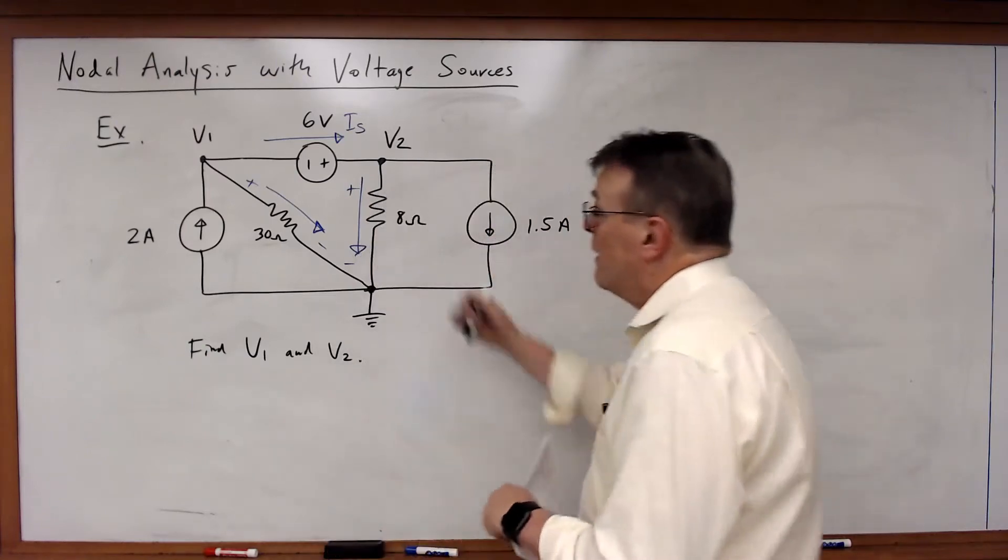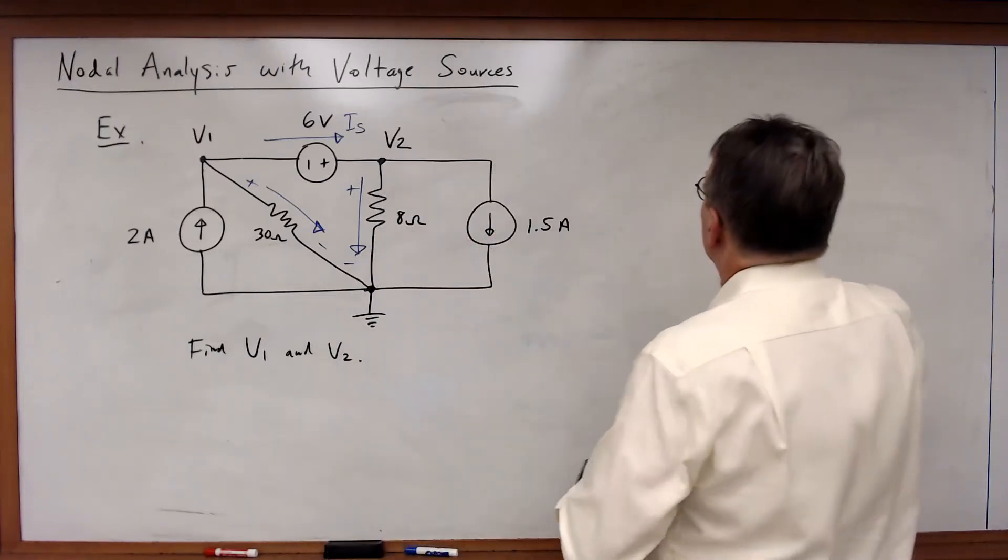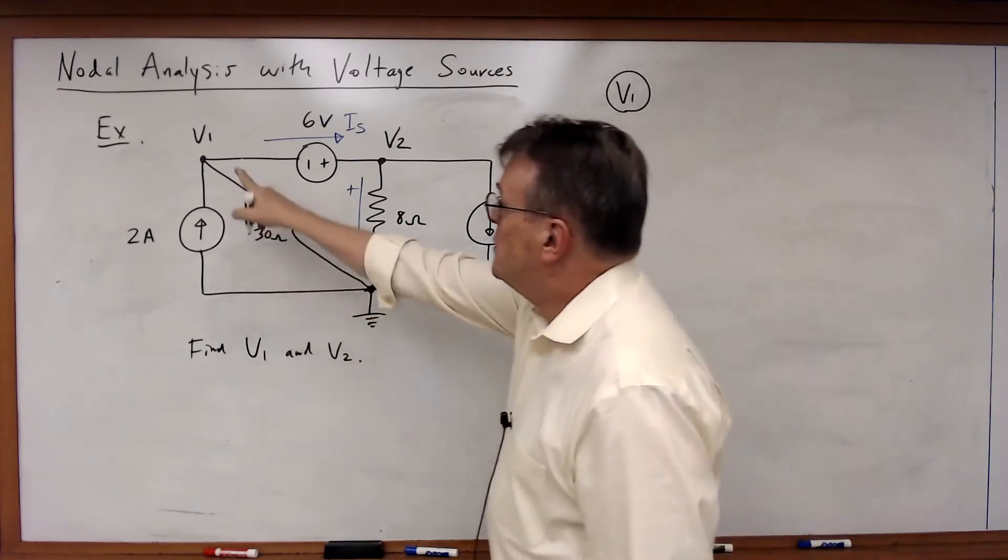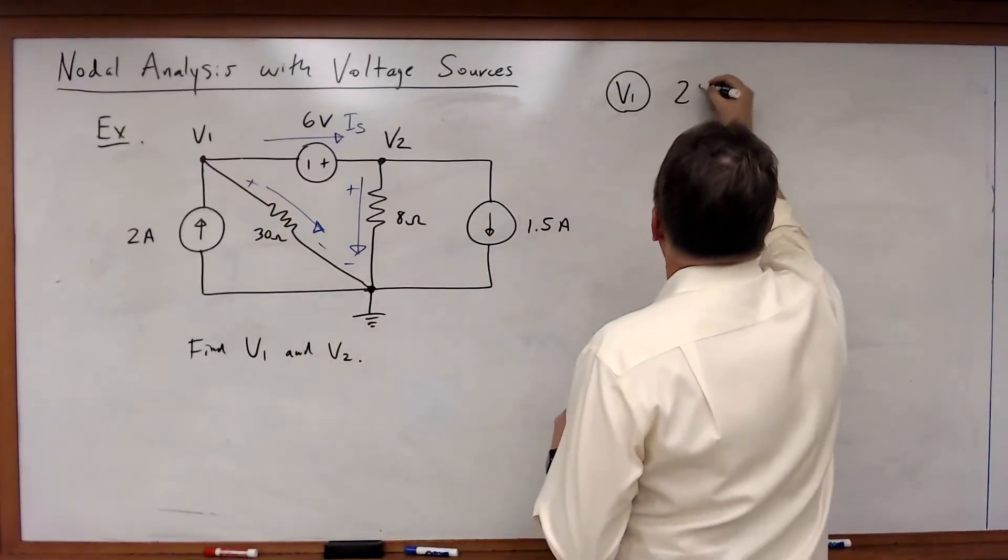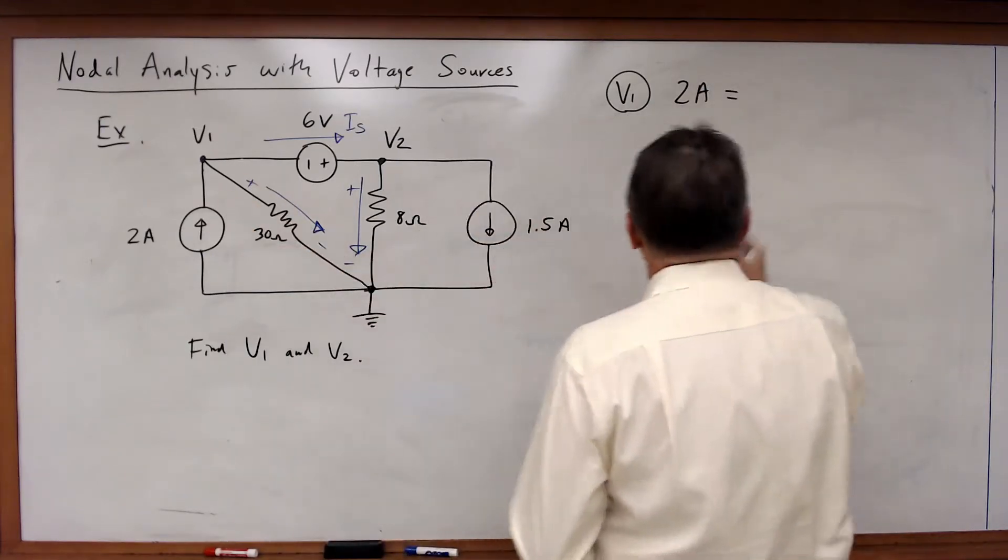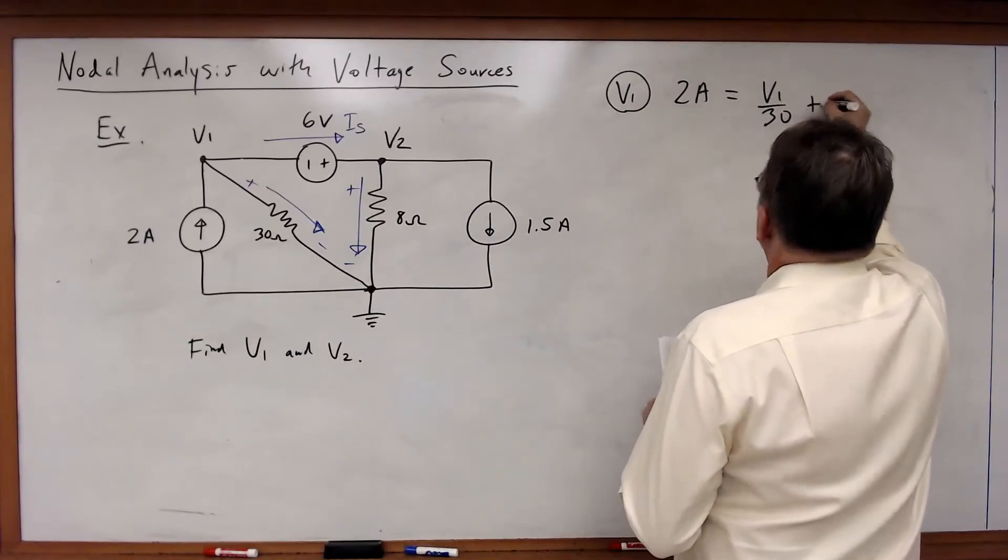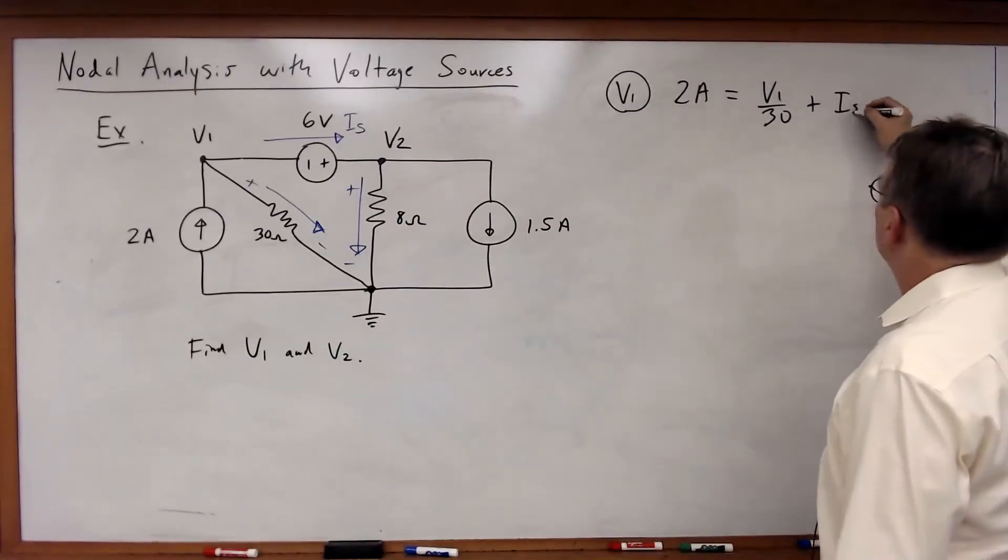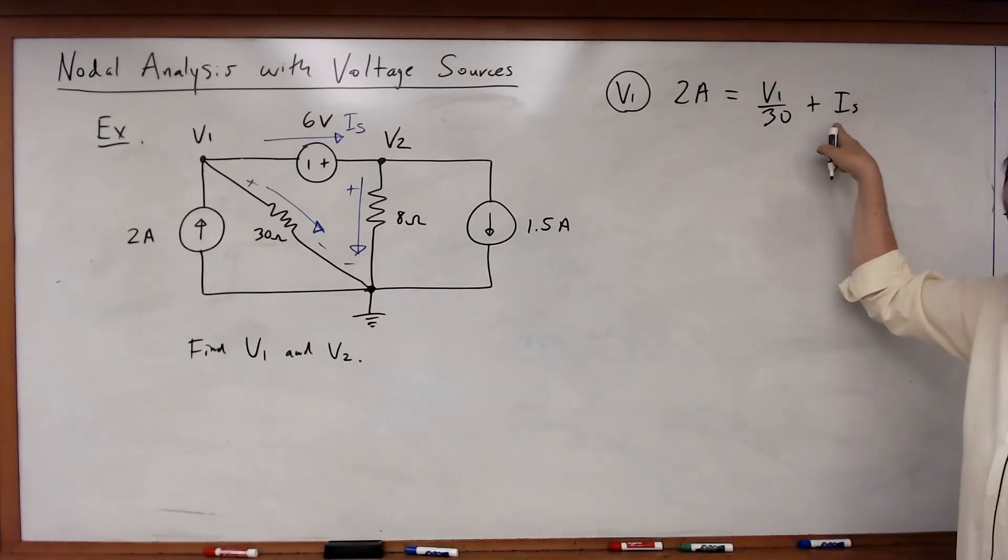Only for a resistor. So in this case we write our KCL equations. For the V1 node. 2 amps is equal to V1 over 30 plus I sub s. And that's very critical.